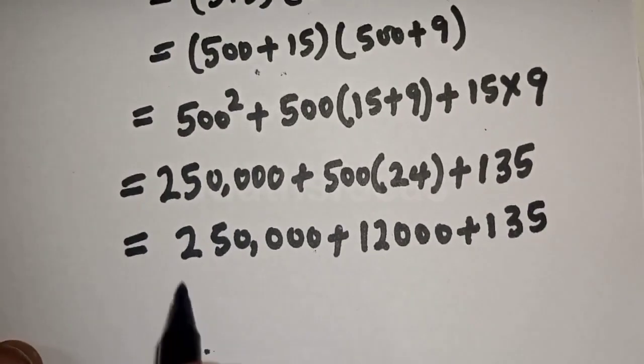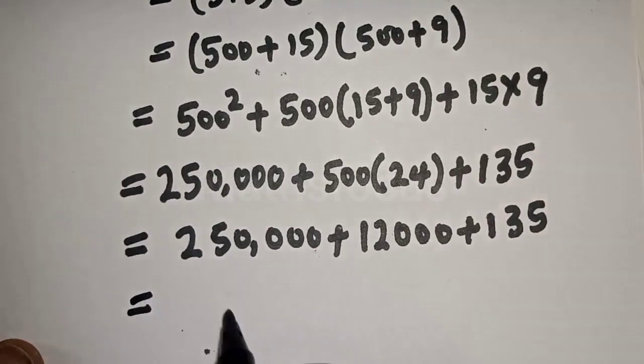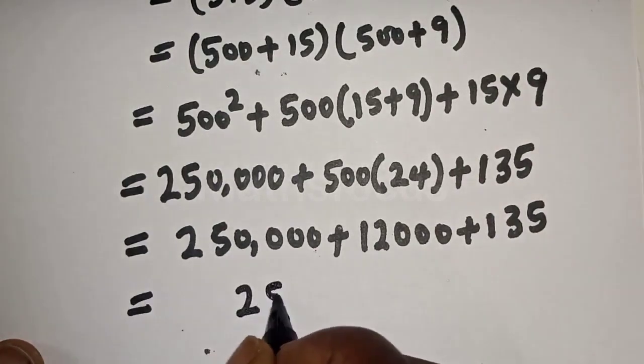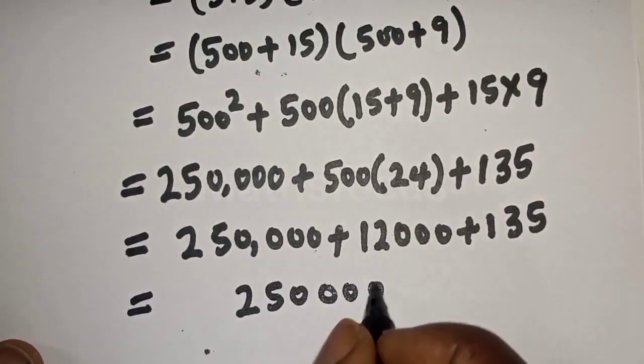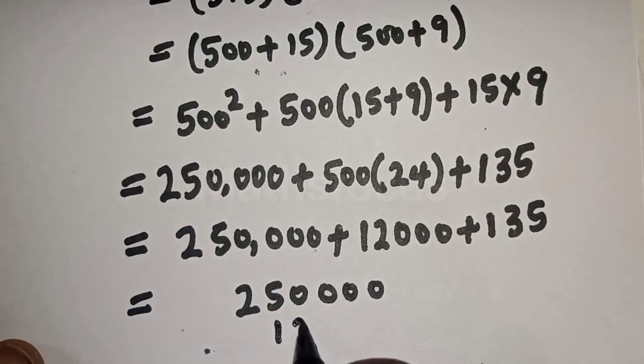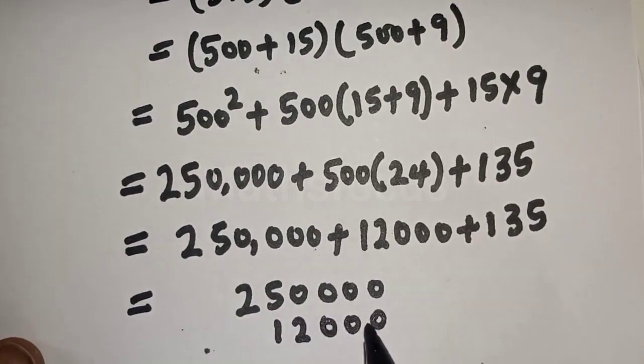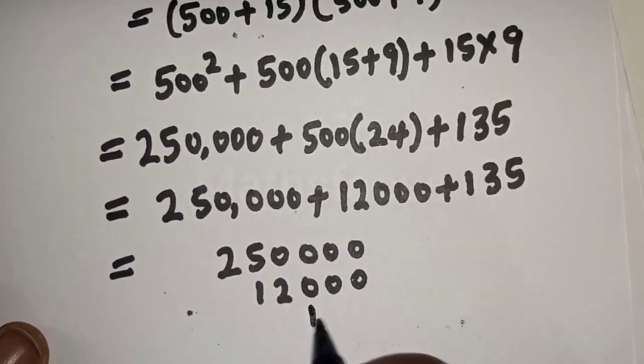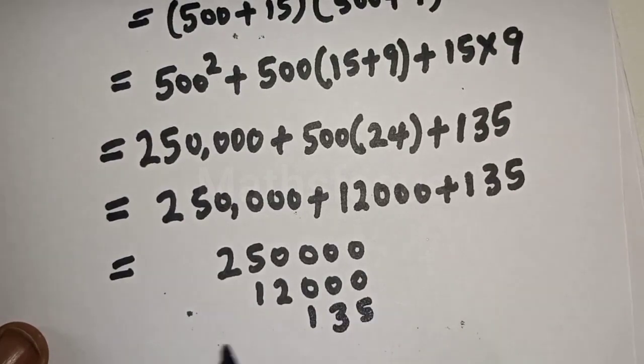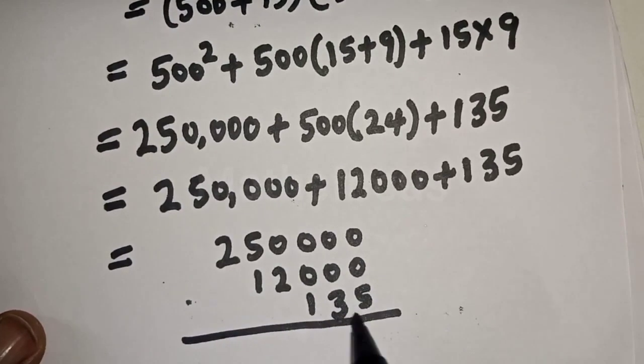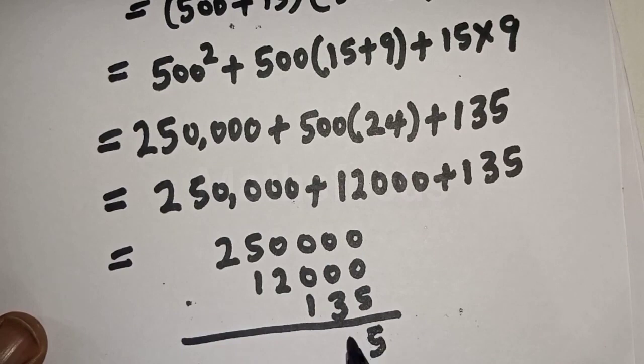Now let's add everything together. We have 250,000, then here is 12,000, and here is 135. We have 5, 3, 1, 2, 6, 2.